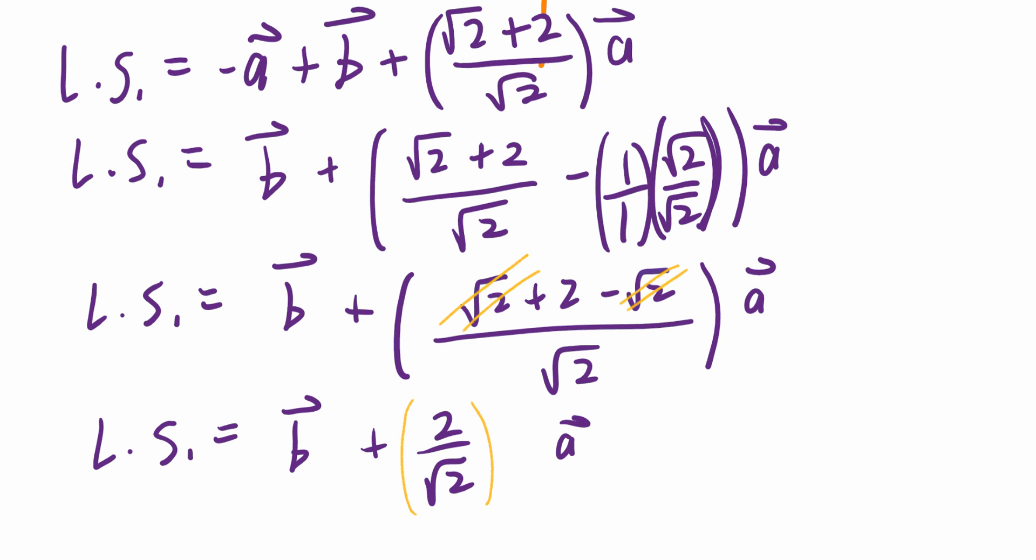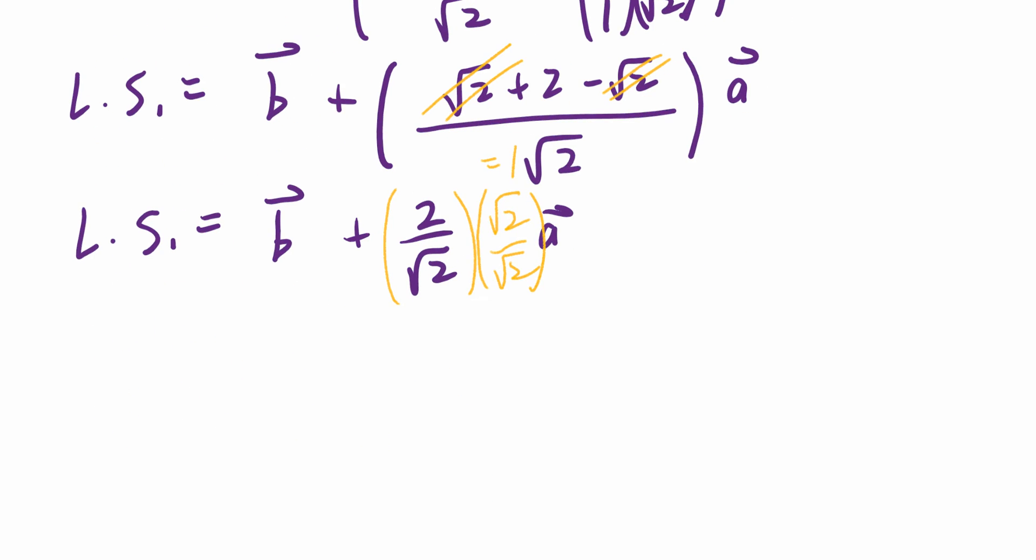Now, you can multiply the top and the bottom by root 2. Effectively, you're multiplying it by 1. You're not changing the actual value, and look what happens. The left-hand side equals to vector B plus, again, if you look at the bottom here, root 2 times root 2 is 2, and 2 divided by 2 is going to be 1. So the left-hand side equals to vector B plus root 2 times vector A, which is exactly the same as the right-hand side. I hope this makes sense.